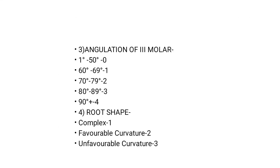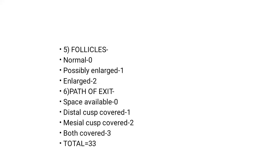Follicle: normal scored zero, possibly enlarged scored one, enlarged scored two. Path of exit: space available scored zero, distal cusp covered scored one, mesial cusp covered scored two, both covered scored three. The total possible score is 33.